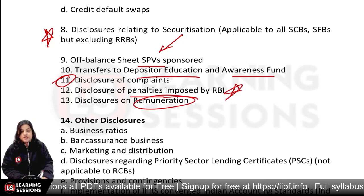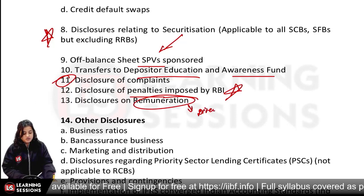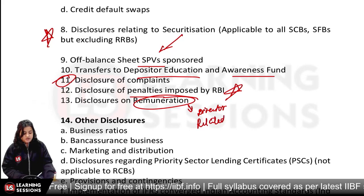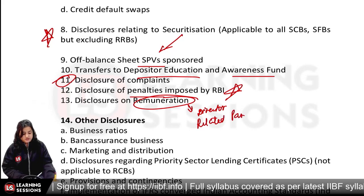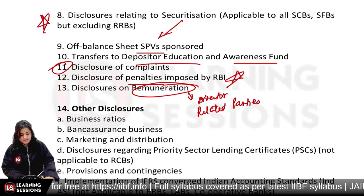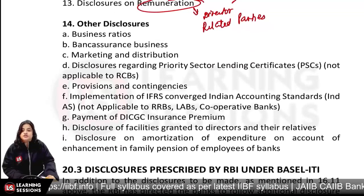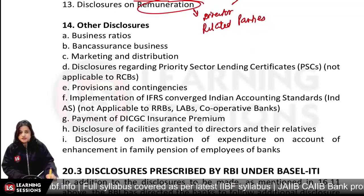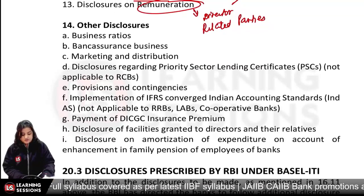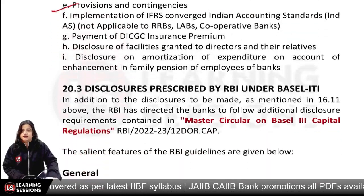Then remuneration — how much remuneration you give — and related parties disclosure. Then business ratios, marketing, distribution, and contingency provisions — all these disclosures are required. You don't need to memorize all these names, but the important disclosures you should remember.